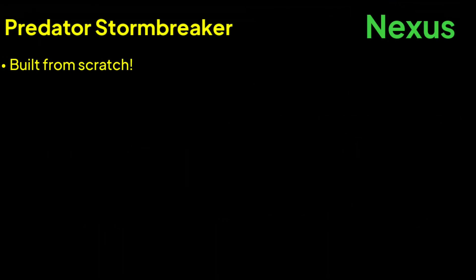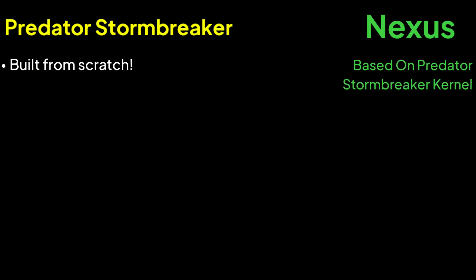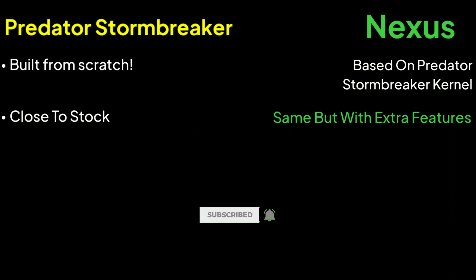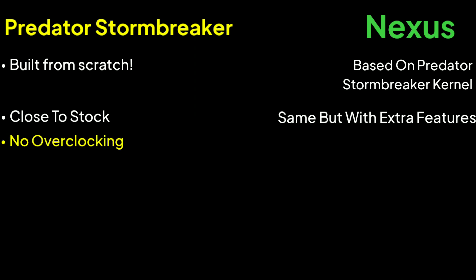Predator Stormbreaker Kernel is built from scratch whereas Nexus Kernel is based on Predator Stormbreaker Kernel. The Predator Kernel is close to stock and is optimized for fast and stable experience, while the Nexus Kernel, being based on the same thing, can offer the same performance and stability but has some extra features as well.